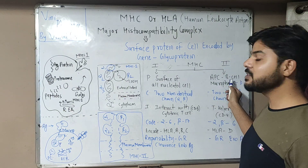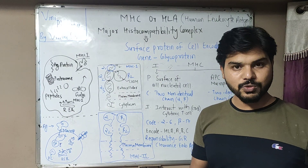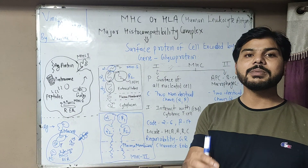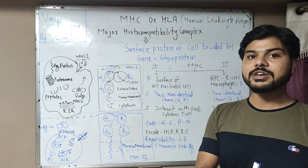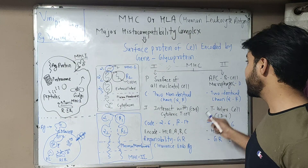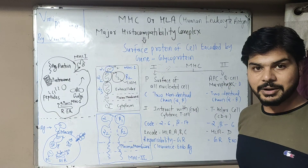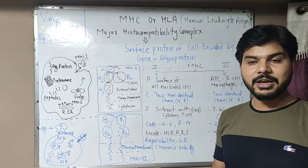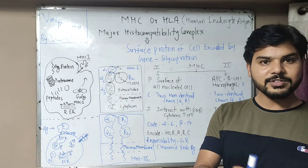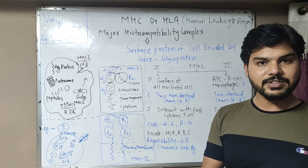MHC Class 2 complex is present on APC — antigen-presenting cells — on their surface. Examples include B cells, macrophages, and dendritic cells. Macrophages and dendritic cells are modified monocytes.